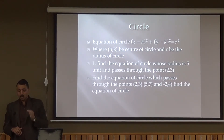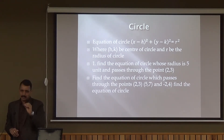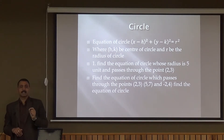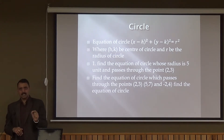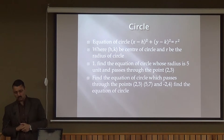Suppose someone asks: find the equation of a circle whose radius is 5 and which passes through the point (2, 3). We have complete information — we have the radius and a point. If we have two points, we can find the center using those two points, and then use the standard form (x − h)² + (y − k)² = R².